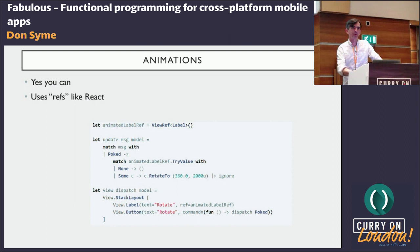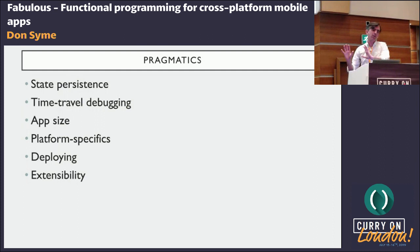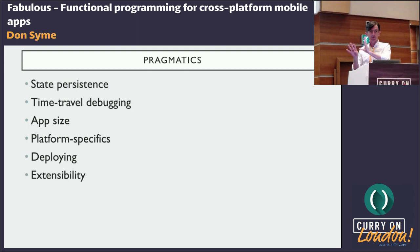Question: One of your slides mentioned time travel debugging — what does that mean? Answer: Because your model is generally functional, immutable data, to go back in time you just reset the model, recompute the view, and your app is back where it was. Most of these React-like systems have debugging tools — often graphical or built into the app — which allow you to step back and forth through the history of the app. That's immensely useful for debugging, and it's very easy to implement in the MVU model.